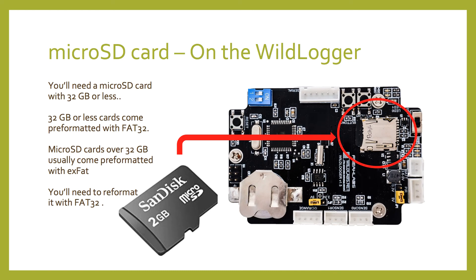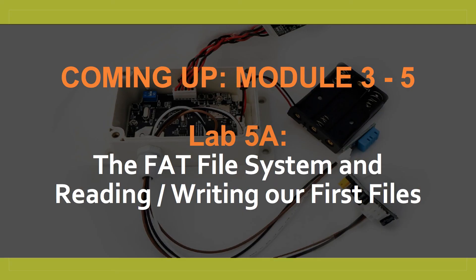Now that we understand a bit more about SD cards, let's go back to our data logger. For the Wild Logger, we'll be saving small amounts of text data to a micro SD card with a FAT32 file system. You'll need a cheapish micro SD card with 32GB or less, and you'll need to put it into the micro SD card slot on the Wild Logger board. In Lab 5A, we'll be writing and reading our first files to the SD card. Let's get into some code.